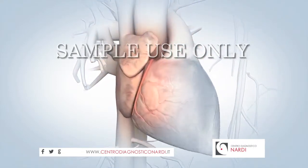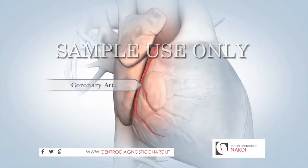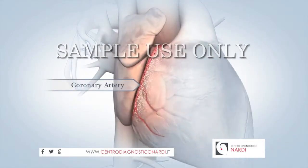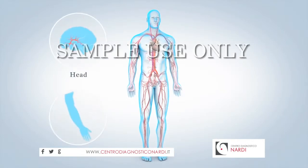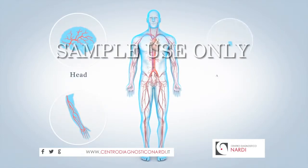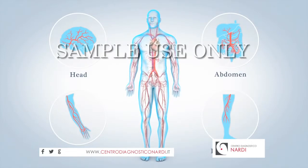The first branches off your aorta are the coronary arteries, which supply your heart muscle with oxygen and nutrients. At the top of your aorta, arteries branch off to carry blood to your head and arms. Arteries branching from the middle and lower parts of your aorta supply blood to the rest of your body.